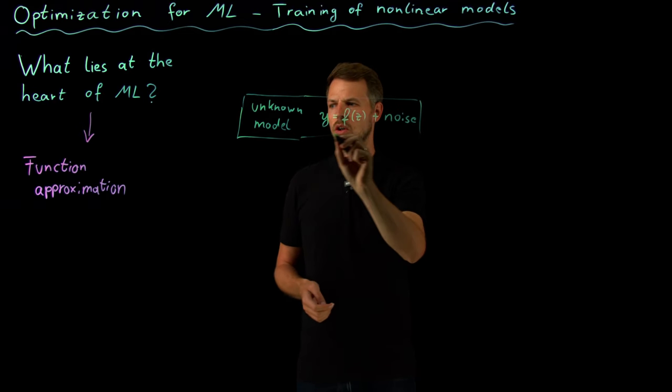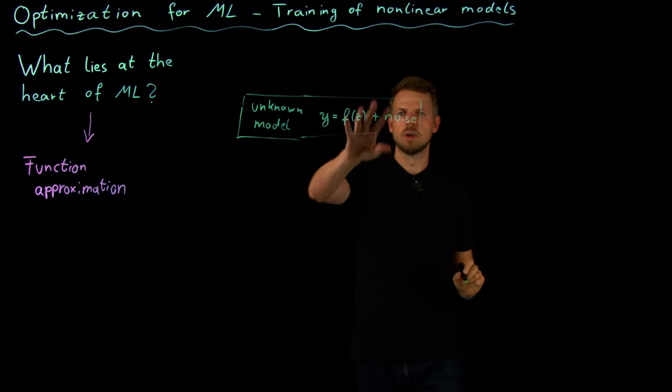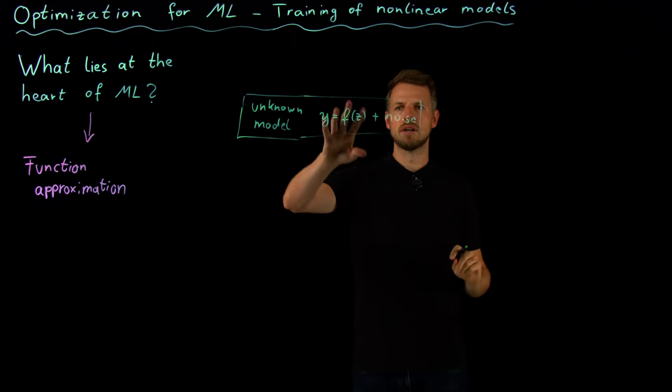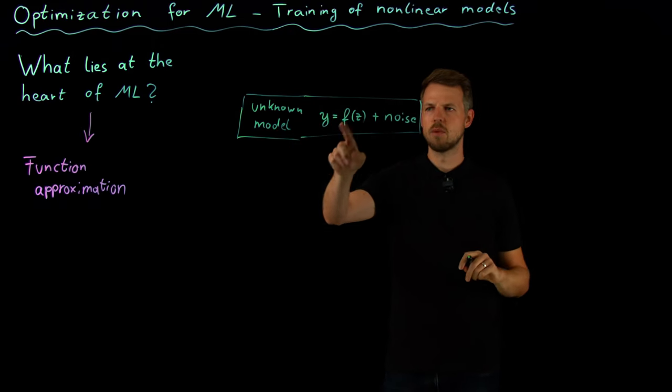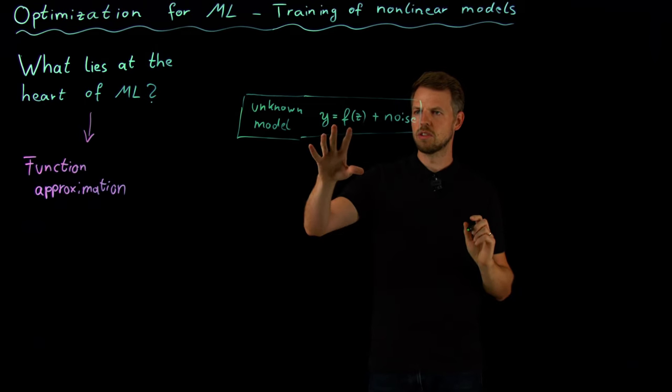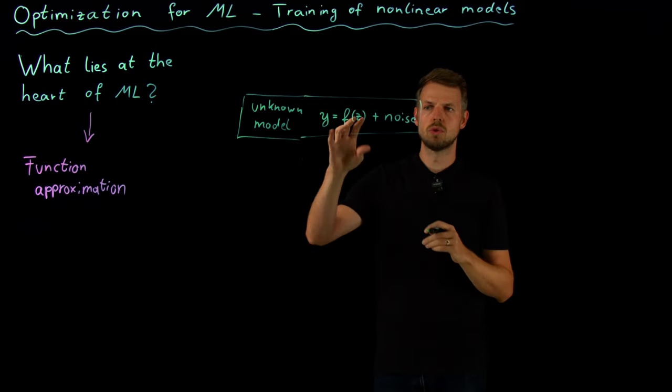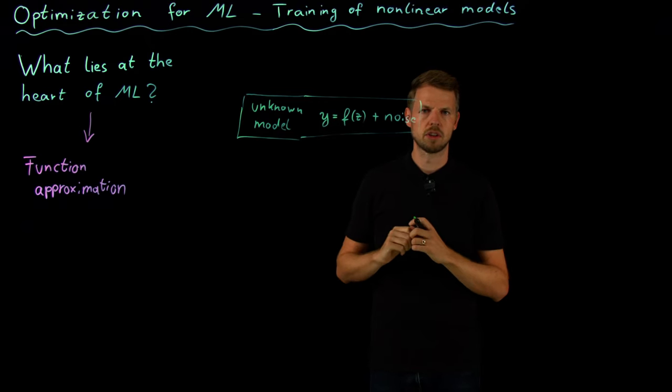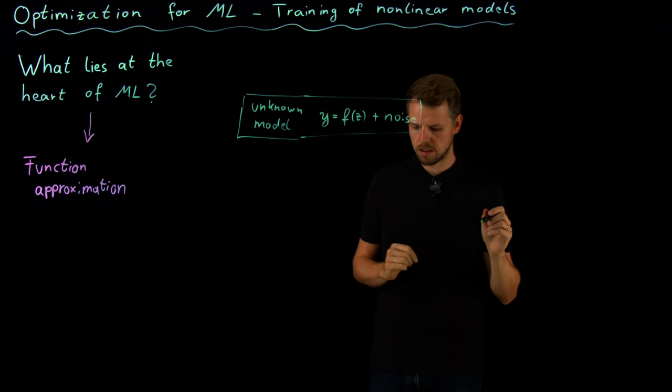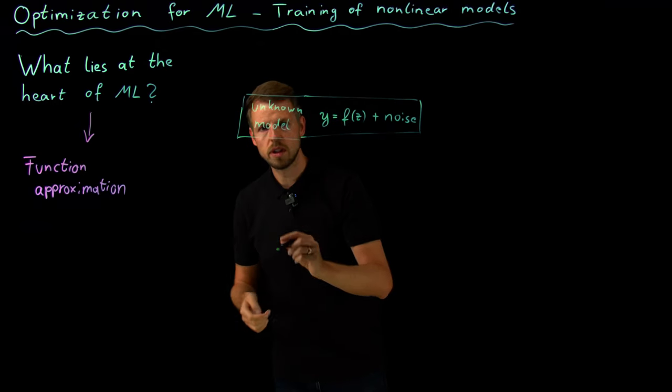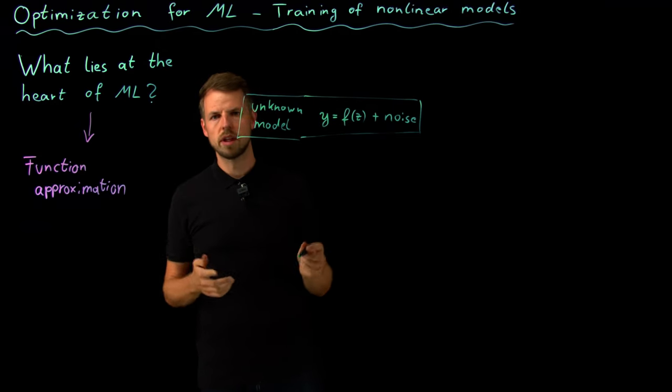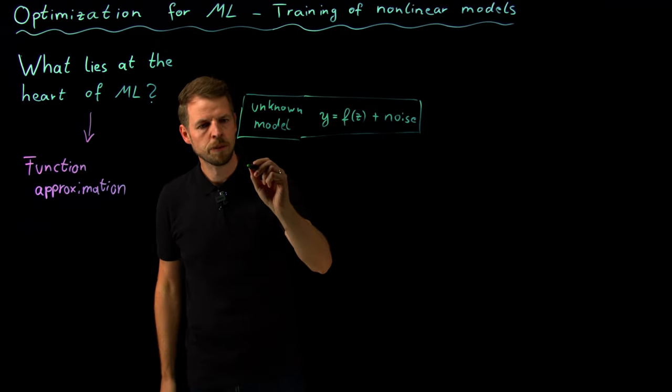We do not really know what this model is—it's unknown—but we assume that there exists a relation in this form. So the question now is how do we use data to learn something about this function even though we do not have an exact description? In supervised learning, which is also known as learning from examples, we collect data.